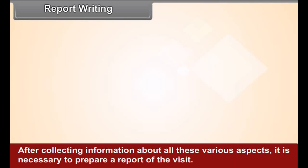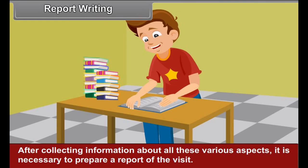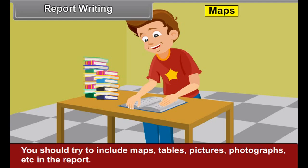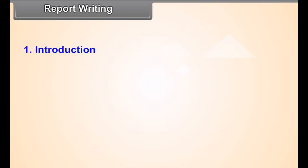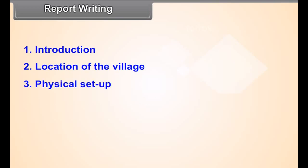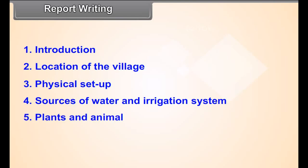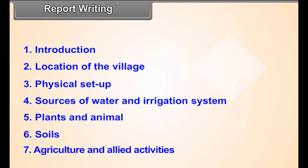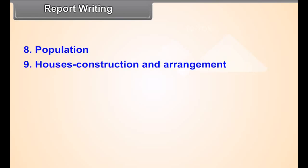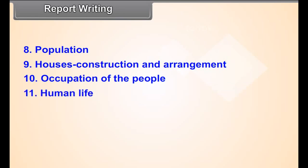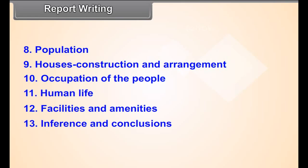Report Writing. After collecting information about all these various aspects, it is necessary to prepare a report of the visit. You should try to include maps, tables, pictures, photographs, etc. in the report. Prepare a report with the help of the following points: introduction, location of the village, physical setup, sources of water and irrigation systems, plants and animals, soils, agriculture and allied activities, population, houses — construction and arrangement, occupations of the people, human life, facilities and amenities, inferences and conclusions, acknowledgements, and references.